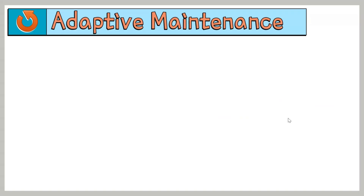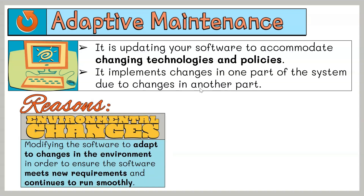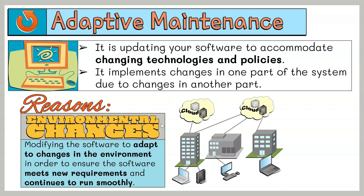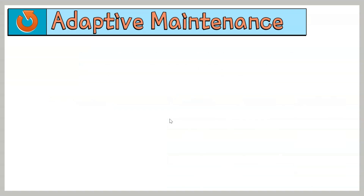The second type is known as adaptive maintenance. Adaptive maintenance involves updating your software to accommodate changing technologies and policies. It includes implementing changes in one part of the system due to changes in another part. Adaptive maintenance happens for two primary reasons. First, environmental changes — modifying the software to adapt to changes in the environment such as new hardware, operating systems, or cloud storage. This ensures the software meets new requirements and continues to run smoothly.